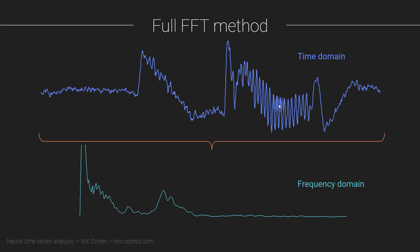For example, when you look at the power spectrum, you see very clearly that there is a peak in this frequency range — somewhere around 40 to 50 hertz — so there's a peak in the gamma frequency range. However, just from looking at this Fourier transform result, you have no idea where this feature appears in time. Is there a continuous gamma oscillation? Are there occasional bursts? Or is it all concentrated in one time period, which is actually the case?